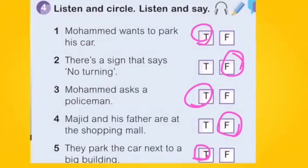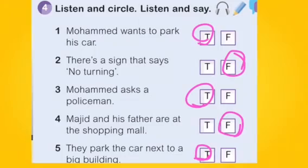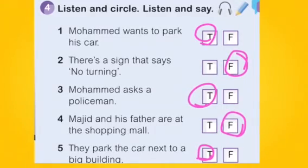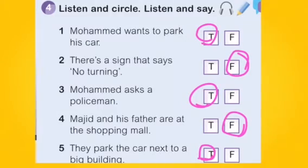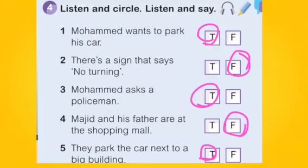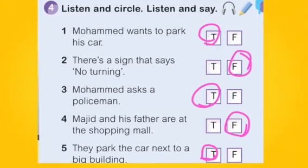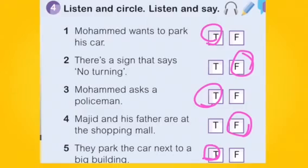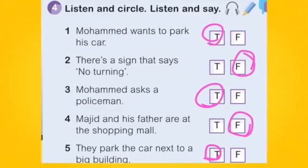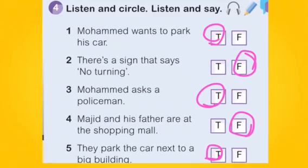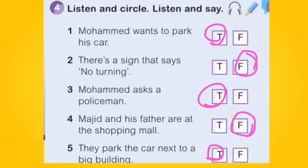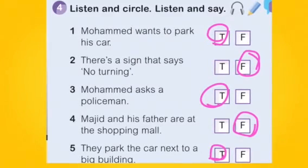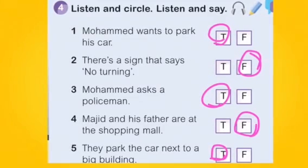Listen and circle true or false. Number one: Muhammad wants to park his car — True. Number two: There's a sign that says no turning — False. Number three: Muhammad asks a policeman — True. Number four: Majid and his father are at the shopping mall — False. Number five: They park the car next to a big building — True.